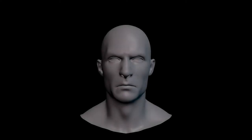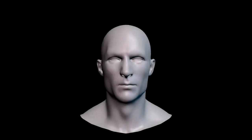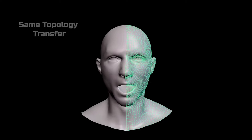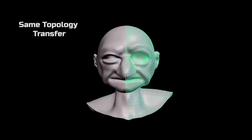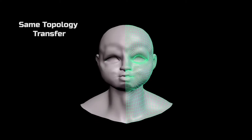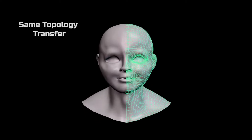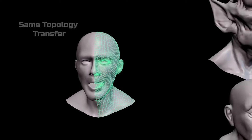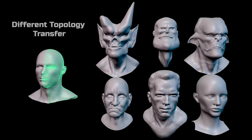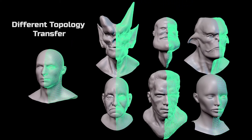Blend shapes are one of the most common forms of facial rigging but require a wealth of expensive artistic talent. But what if we had a one button solution to transfer these shapes to another character of the same topology? Now what if we had that same button to transfer these shapes to characters of different topology?